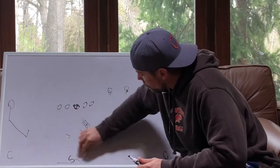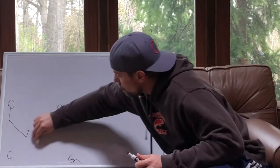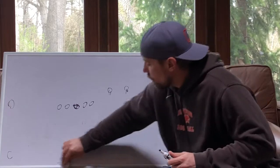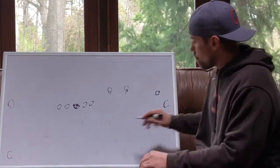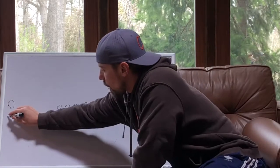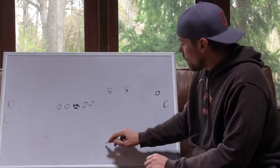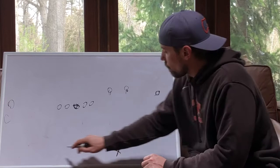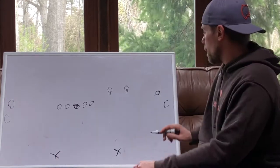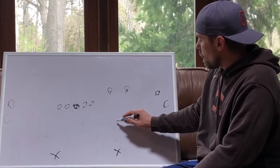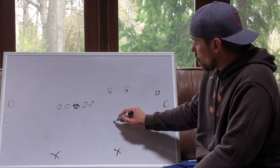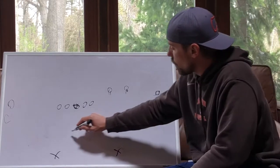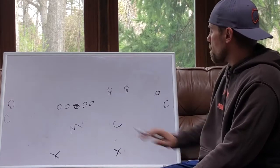We already showed smash in one of the other videos against cover two. We'll show it again. Corners are down in cover two. They're trying to funnel inside. They're going to expand their safety over here a little bit. And they've got a really curl player here. They've got a middle player.